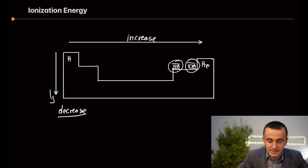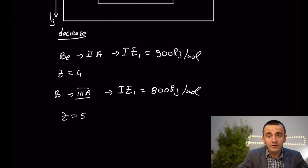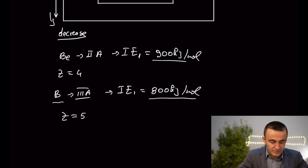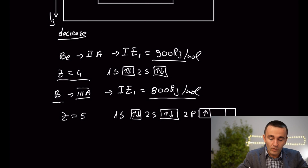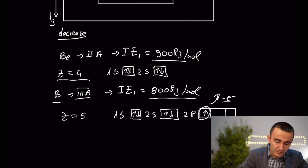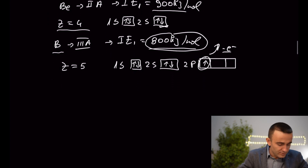Let's take two examples to explain the exceptions. Boron, which is in Group 3A, is against the trend — it has a lower first ionization energy compared to beryllium. The way to explain this is through electronic configuration. Boron has one electron in the 2p orbital. We know the 2p orbital is at a higher energy level compared to 2s, so it is easier to remove that electron from 2p than from 2s. That is why boron has a lower first ionization energy compared to beryllium.